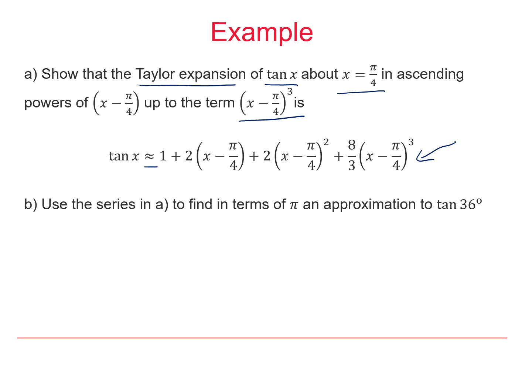We have an approximately equals to because it is an approximation and it's alluded to here in that we're looking for an approximation in the second part of tan 36 degrees. And 36 degrees is actually quite close to where we've based our expansion around because π over 4 is 45 degrees.